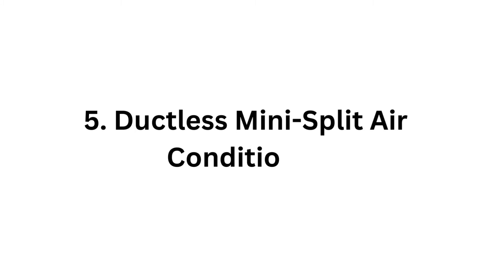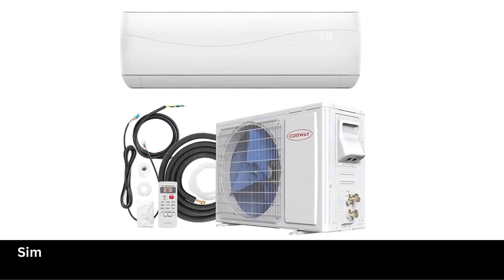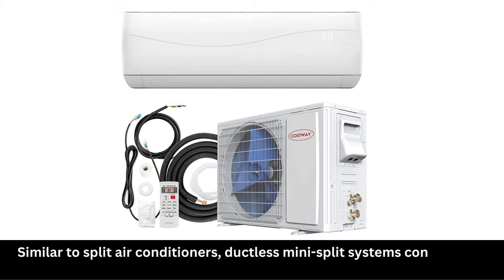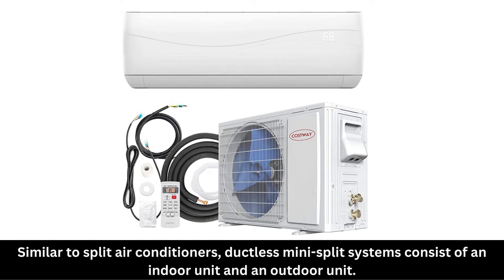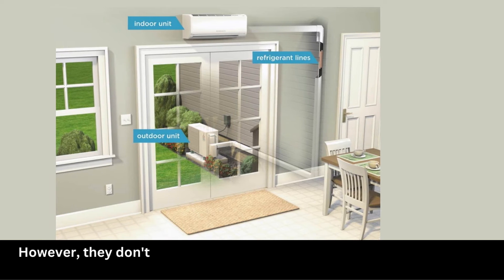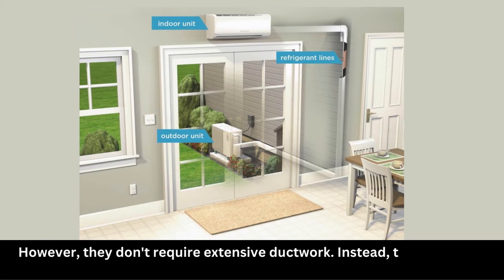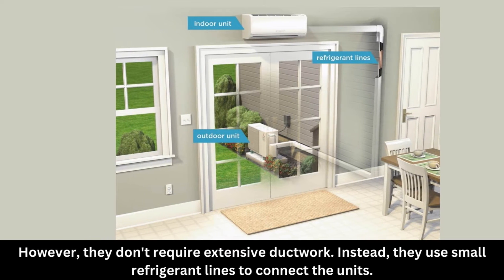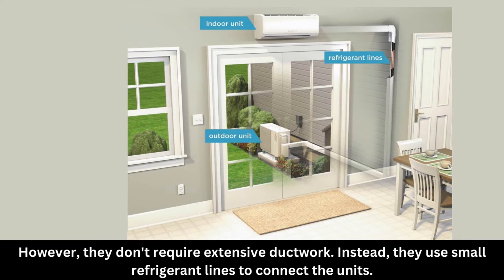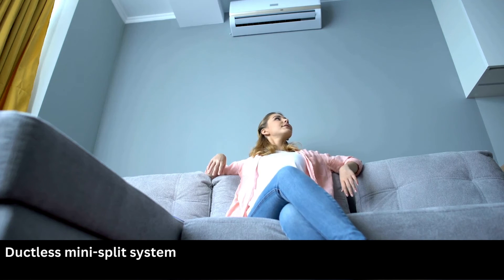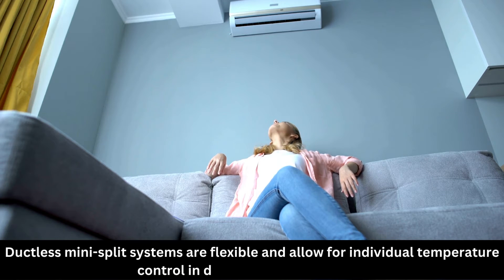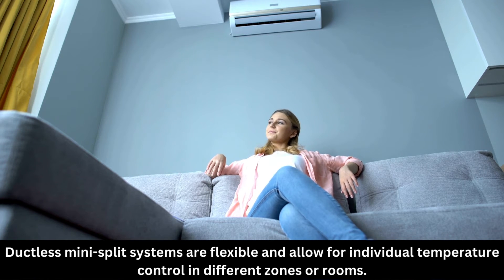Ductless mini split air conditioner. Similar to split air conditioners, ductless mini split systems consist of an indoor unit and an outdoor unit. However, they don't require extensive duct work. Instead, they use small refrigerant lines to connect the units. Ductless mini split systems are flexible and allow for individual temperature control in different zones or rooms.